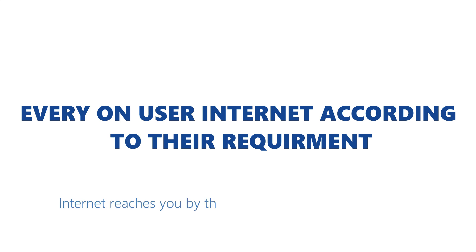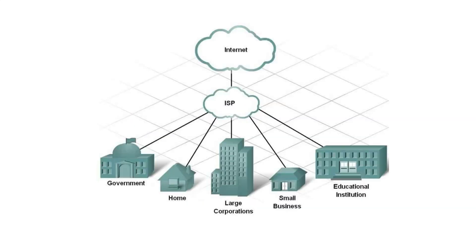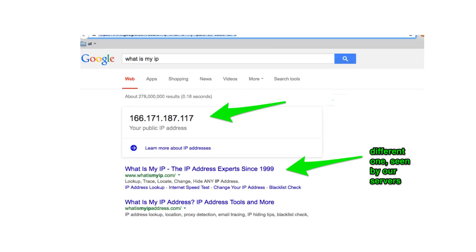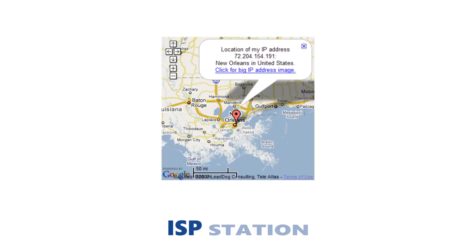Everyone uses a network according to their requirement. The internet reaches you by the combination of all these networks. The internet is mostly provided by your communication service providers, also known as Internet Service Providers, or ISP. If you search 'what is my IP' in Google, you will find your IP address, service provider, and location — that is called an ISP station. Your internet providers like Jio, Idea, Airtel, Vodafone, etc. are located there.